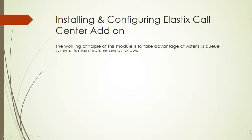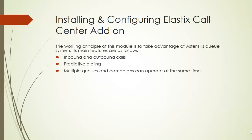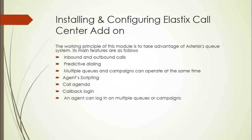Installing and configuring the Elastix Call Center add-on. The working principle of this module is to take advantage of the Asterisk queue system. Its main features include inbound and outbound calls, predictive dialing, multiple queues and campaigns operating simultaneously, agent scripts, call agenda, callback login, an agent logging into multiple queues or campaigns, reports, call monitoring, and recording.